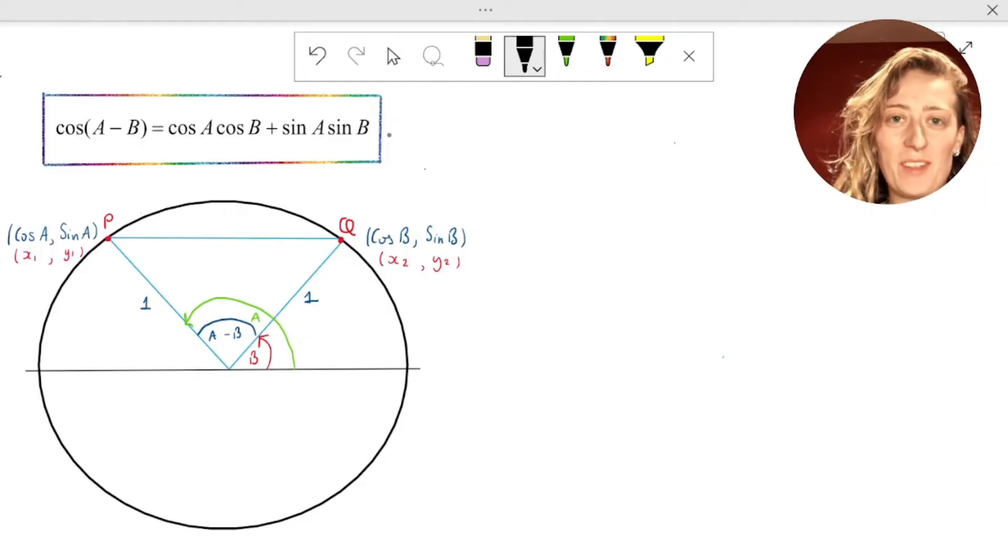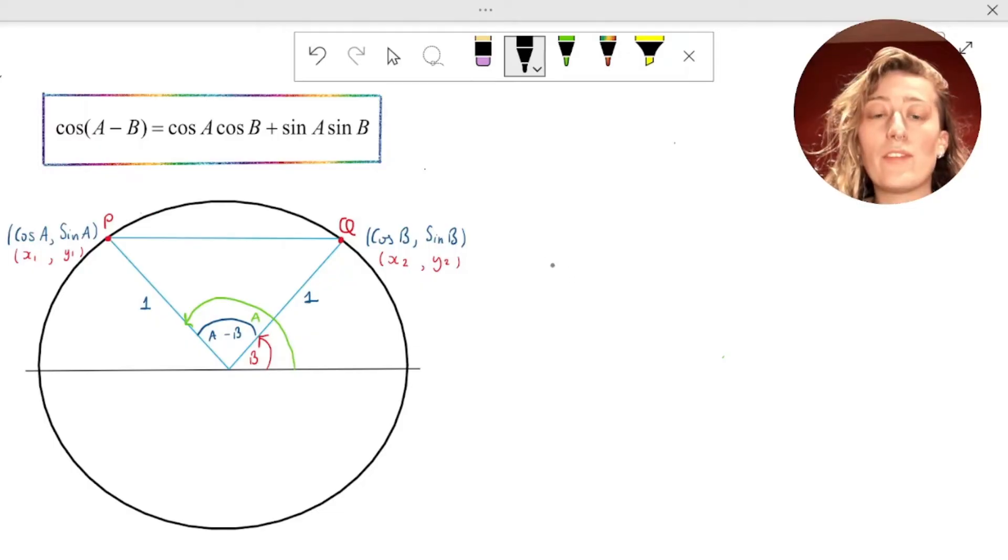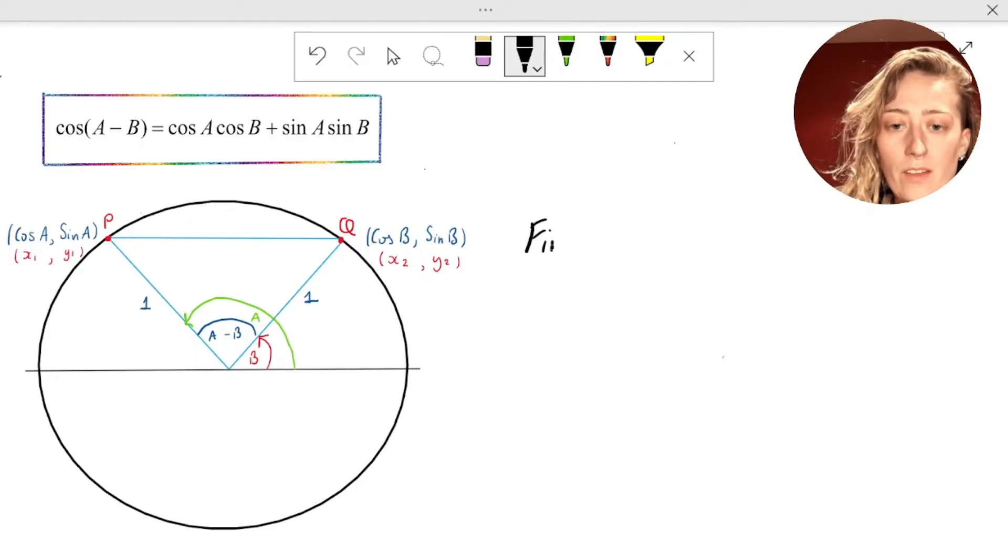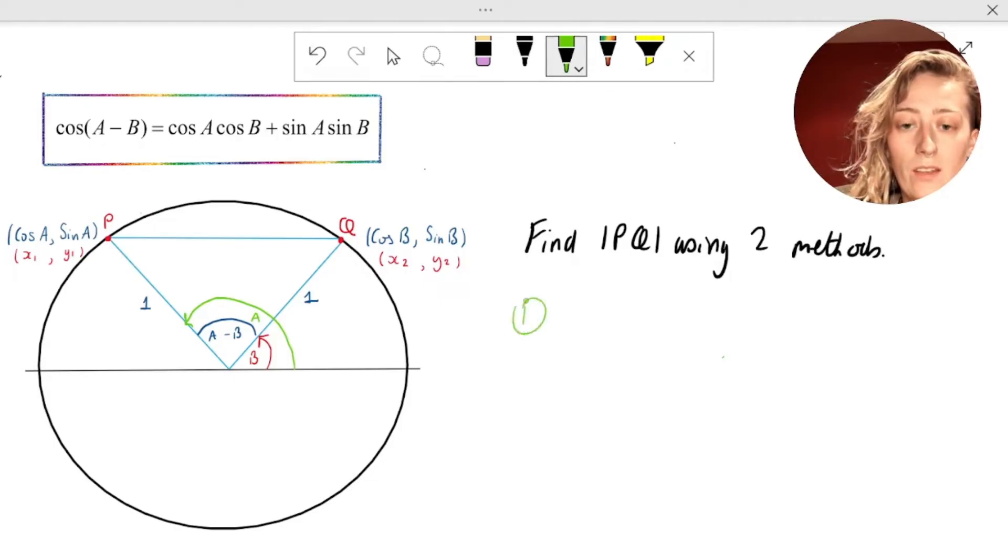And now we're ready to the mathematical part of the proof. So what we're going to do is we're going to try to find this distance PQ using two different methods. And the first method that we're going to use is the distance formula. So the distance between two points. So let's just write that much down. So we're going to say that we're going to find PQ using two methods. And the first method, method one, I should say, is the distance formula.